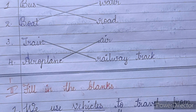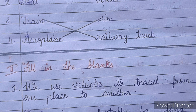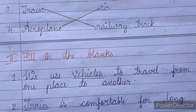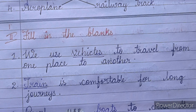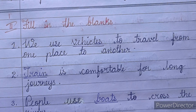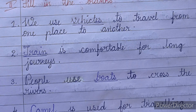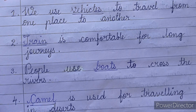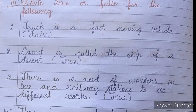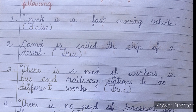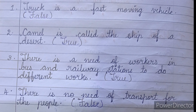Second main: Fill in the blanks. Number one: We use vehicles to travel from one place to another. Number two: Train is comfortable for long journeys. Number three: People use boats to cross the rivers. Number four: Camel is used for traveling in deserts.